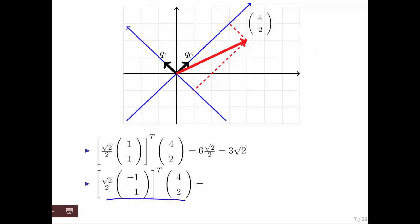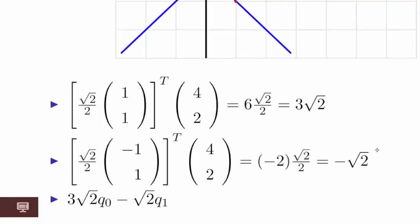Similarly, we can compute by how much we need to multiply q1 to get to this point right here, which is the projection of b onto the space spanned by q1. If you do that calculation, you get that, and you get that.